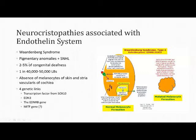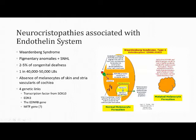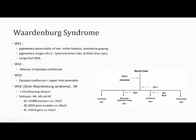Waardenburg syndrome is the most common neurochristopathy associated with the endothelin system. It classically presents with pigmentary anomalies and sensorineural hearing loss, accounting for 2-5% of all congenital deafness, with an incidence of 1 in 40,000-50,000 live births. Absence of melanocytes in the skin and stria vascularis of the cochlea accounts for the hearing loss. Four genetic links are described: the transcription factor SOX10, endothelin-3, the EDNRB gene, and the MITF gene. Defects in these genes result in lack of gene products needed for melanocyte formation.